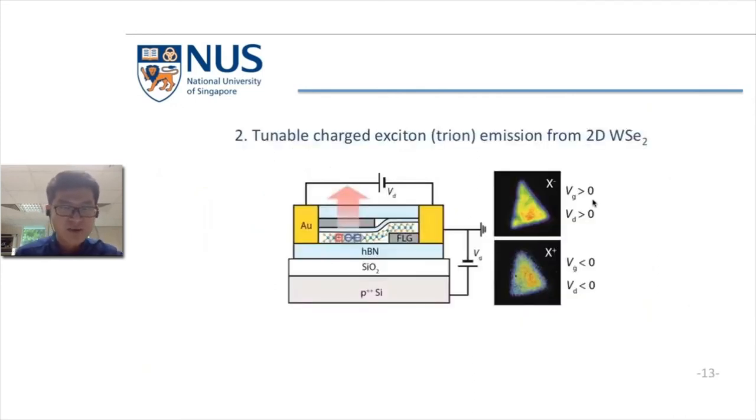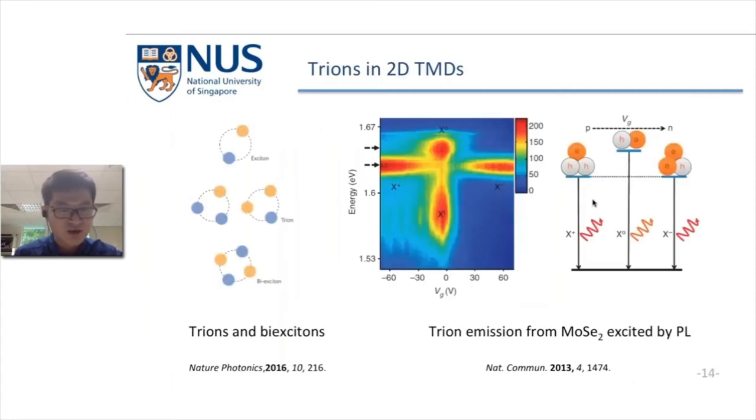Next I will talk about another topic that we achieved: charged exciton emission from 2D tungsten diselenide. Trions are bound excitons with additional charge. It can be either electron or hole. If the trion consists of two holes and one electron, it is a positive trion. If it consists of two electrons and one hole, it is a negative trion. The trion emission can be detected through photoluminescence if we tune the doping level of the monolayers. For example, by just a simple back gate, we can achieve the redistribution of the oscillator strength from neutral exciton to negative trion, which is in the positive gates, and positive trion, which is in the negative gates when the sample is in P-doped region.